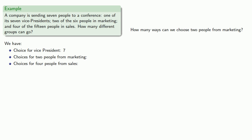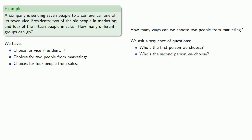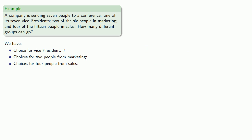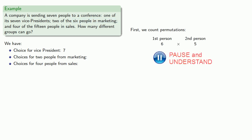How about those two people from marketing? We can ask a sequence of questions: who's the first person we choose, and who's the second person we choose. But since we can switch our answers without changing our results, this itself is a combination. So first we count our permutations. There are six people in marketing, so there are six ways to choose the first person and five ways to choose the second, giving 30 permutations.